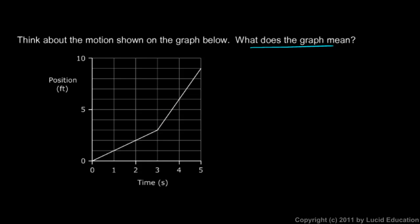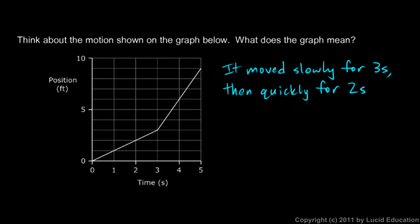So when we're asked what the graph means, we can say it moved slowly for three seconds and then quickly for two seconds.